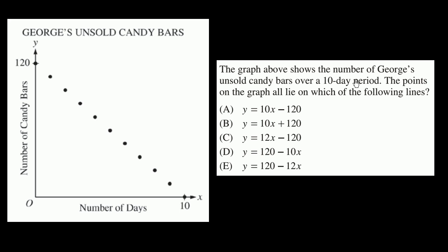The graph above shows the number of George's unsold candy bars over a 10-day period. The points on the graph all lie on which of the following lines?